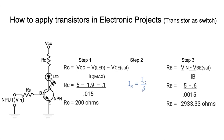RB is calculated using the equation: RB = (VIN − VBE) / IB. There is no LED in this path, but there is a voltage drop VBE across the base-emitter junction, which is approximately 0.6 to 0.7 volts for most transistors. So RB = (5 − 0.6 or 0.7) / 0.0015.